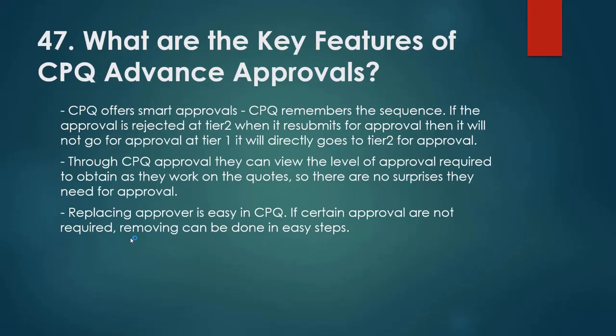What are the key features of CPQ advanced approvals? CPQ offers smart approvals — CPQ remembers the approval sequence. If an approval is rejected at tier 2, when resubmitted it will not go back to tier 1; it will go directly to tier 2. Through CPQ approvals, we can view the level of approval required as reps work on the quotes, so there are no surprises about where approval is needed. Replacing an approver is easy in CPQ, and if certain approvals are not required, removing them can be done in easy steps.